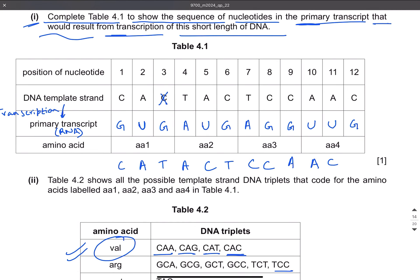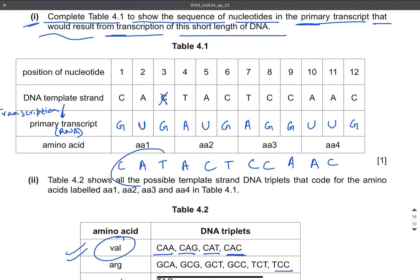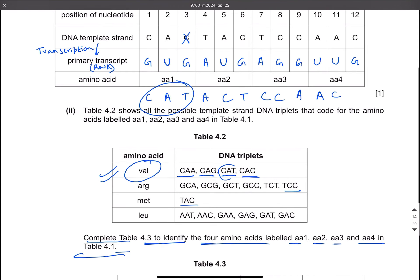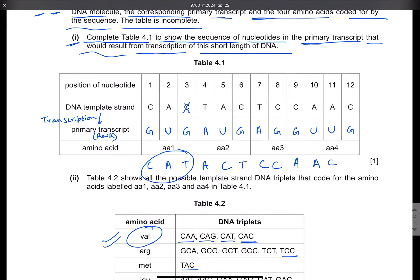What happens to the first amino acid? The triplet CAC is now changed to CAT. Since CAC was coding for valine and CAT also codes for valine, there will be no change in the first amino acid — it will remain valine.